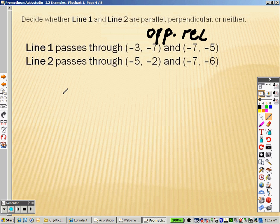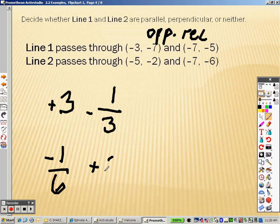Opposite reciprocals. Here are some examples. If I gave you the slope of 3, the opposite reciprocal is negative 1 third. Why? Opposite is negative, because this is positive. That's negative. Reciprocal means you flip it. So if I gave you negative 1 over 6, the opposite reciprocal, the opposite is positive. The reciprocal, you flip it to get 6 over 1. So 6 is the opposite reciprocal.